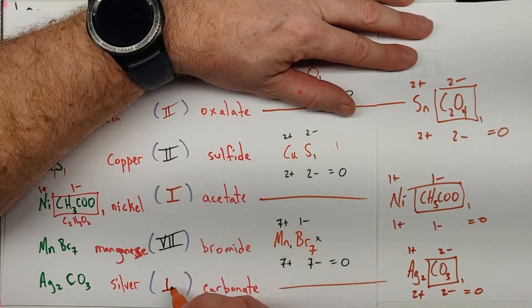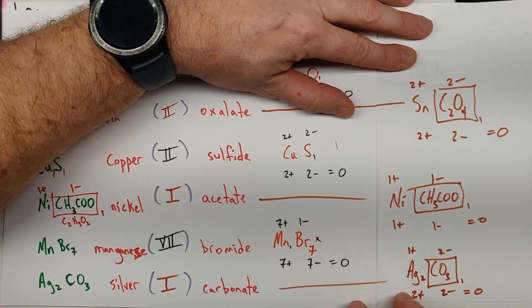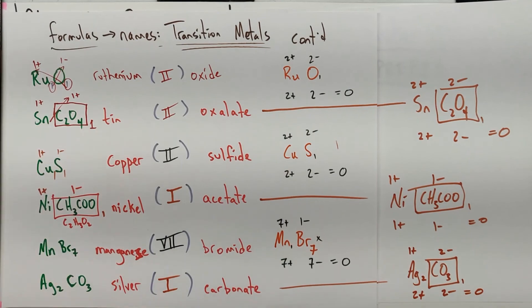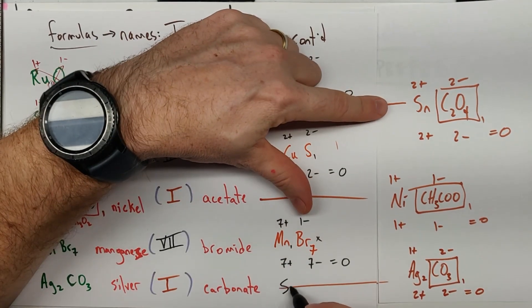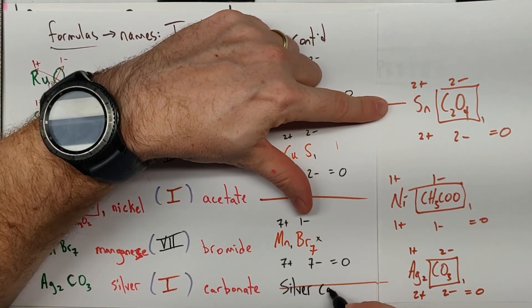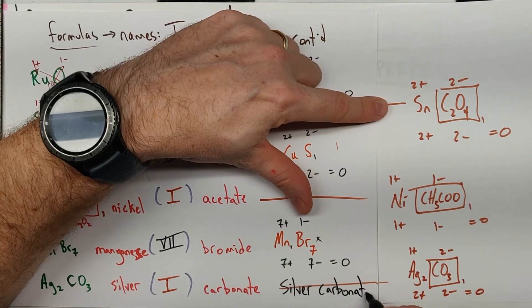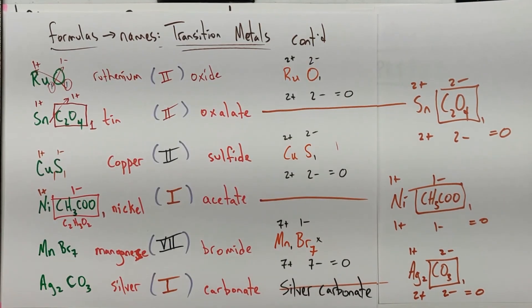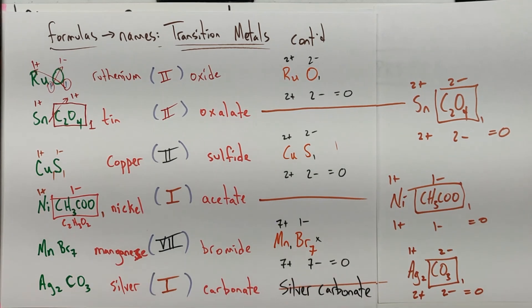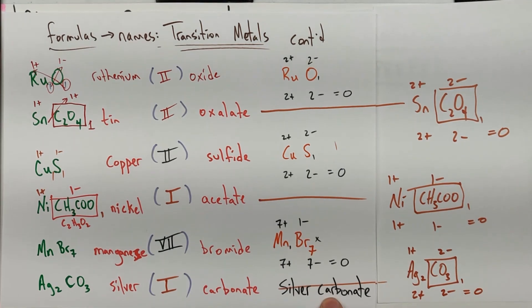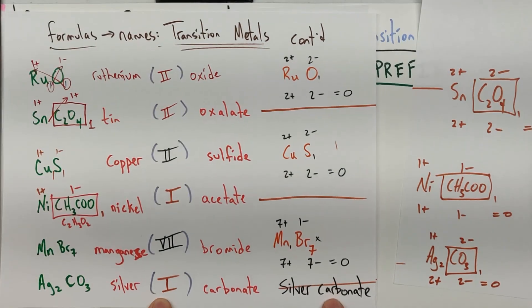But I think most people, or in most classes anyway, the teacher would have just said, hey, silver's a 1, you never put a Roman numeral, and they would have just put silver carbonate. But again, why memorize a couple things that have specific charges when you can write silver one carbonate, and no one's going to be confused. So silver carbonate, you'd probably see it. Similar situation with zinc, but no harm in putting that one there.